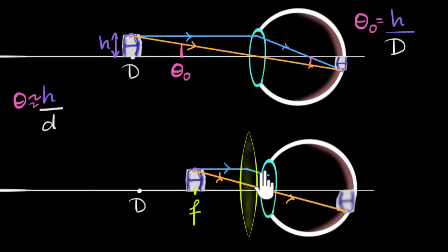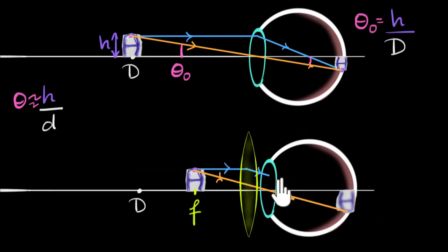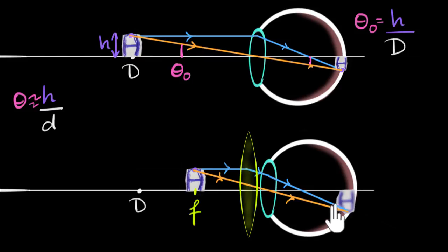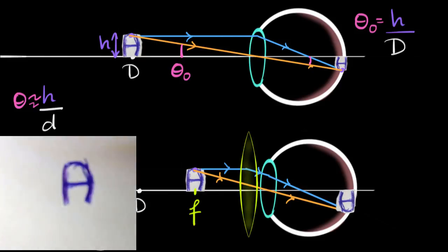Our eyes can easily converge these parallel rays, because parallel rays come from objects which are very far away, and looking at things far away is the easiest to converge. So our eyes can now converge this beam of light with ease, and because it can now converge the beam, this will become very sharp — exactly what we saw when we introduced the lens.